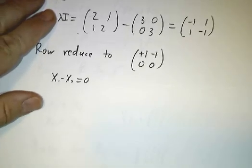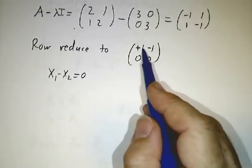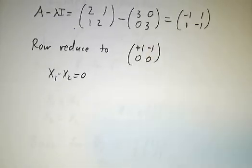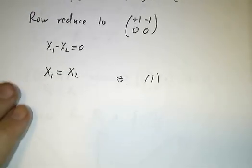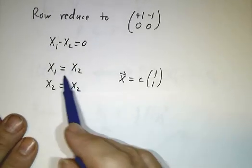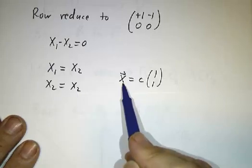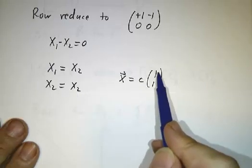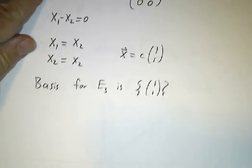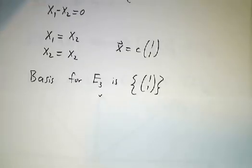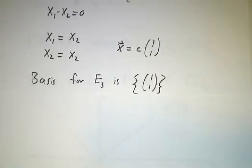Then we write down our equations. There is only one equation. x1 minus x2 is 0. So x1 is x2. Of course, x2 equals itself. And that means the vector x has to be some multiple of. So our basis for the eigenspace e3 is.